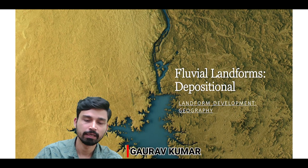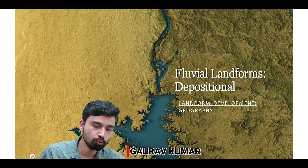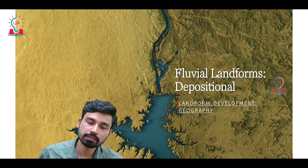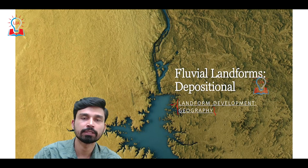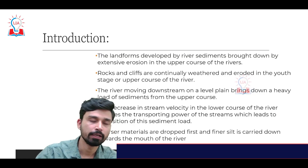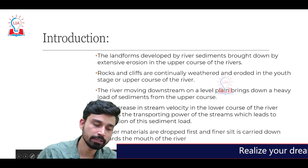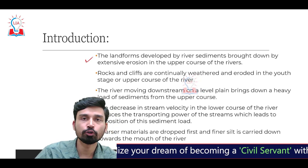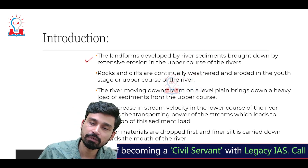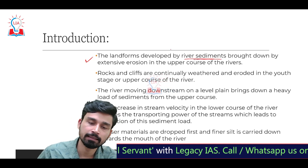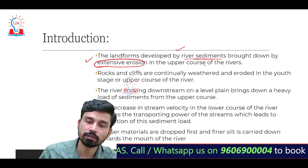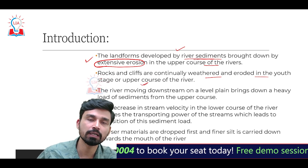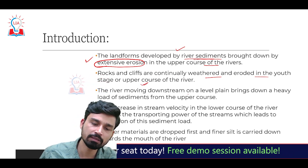Welcome students to Legacy. In today's video we are going to discuss fluvial landforms — that means the landforms that develop due to the depositional work of the river. This concept comes under the chapter of landform development in geography. In simple terms, fluvial deposition landforms are landforms that develop due to deposition of sediments brought by a river after causing extensive erosion in the upper course. The rocks and cliffs are continuously weathered and eroded in the youth stage or upper course of the river.